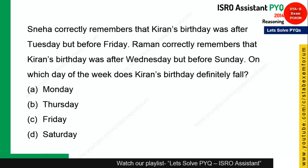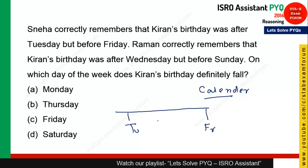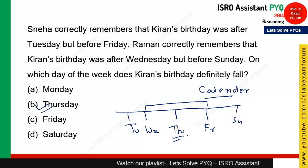This question is from the Calendar topic. Sneha remembers Kiran's birthday was after Tuesday and before Friday. Raman remembers it was after Wednesday and before Sunday. Combining both, the birthday falls after Wednesday and before Friday — leaving only Thursday. So Thursday is the day on which Kiran's birthday fell. Option B is the correct answer.